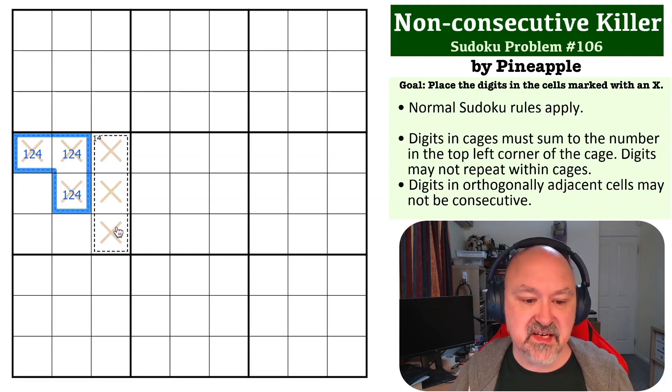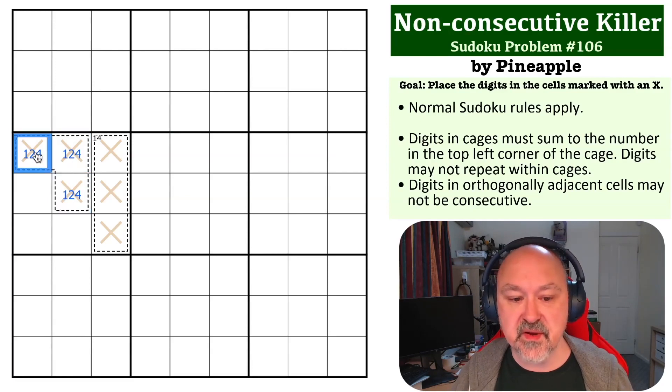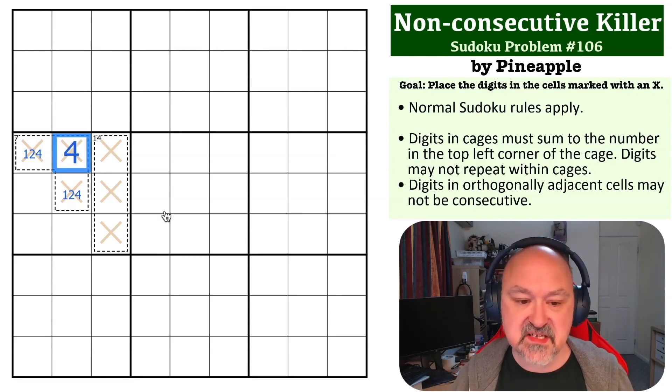Now you cannot have consecutive digits. So if I put a one here, there would be a two consecutive with it. So that wouldn't work. If I put a two here, there'd be a one consecutive with it. So this has to be the four and these become the one, two.